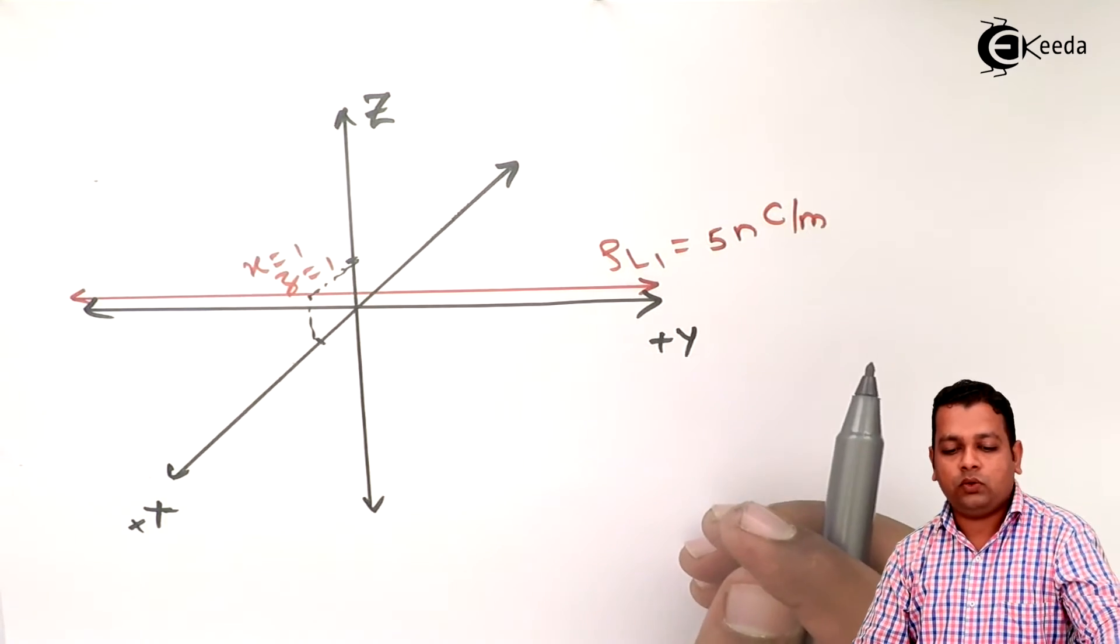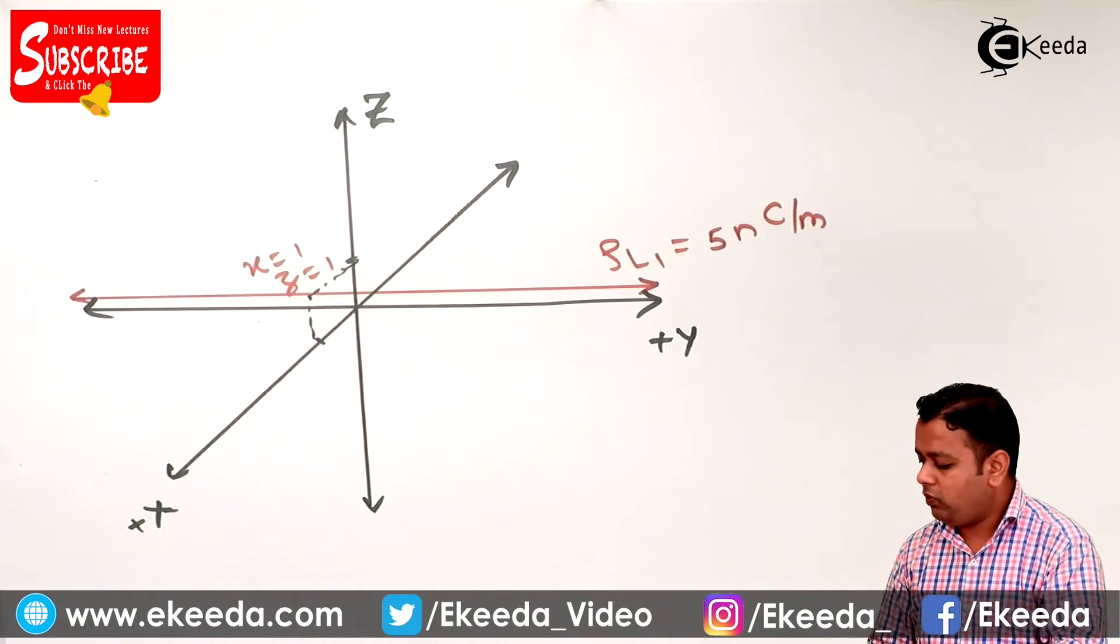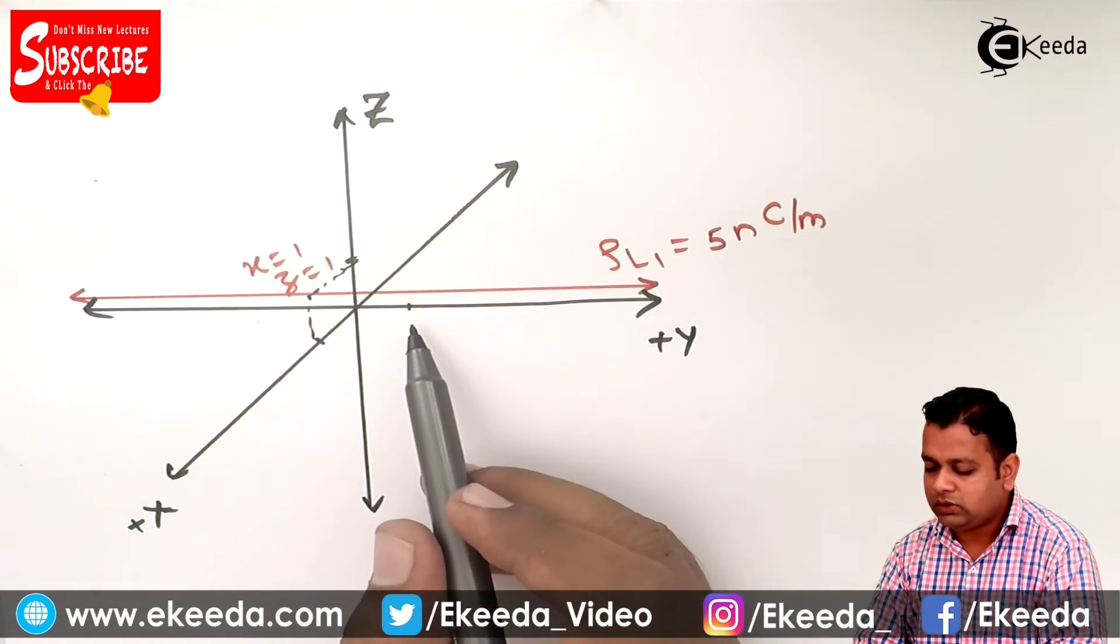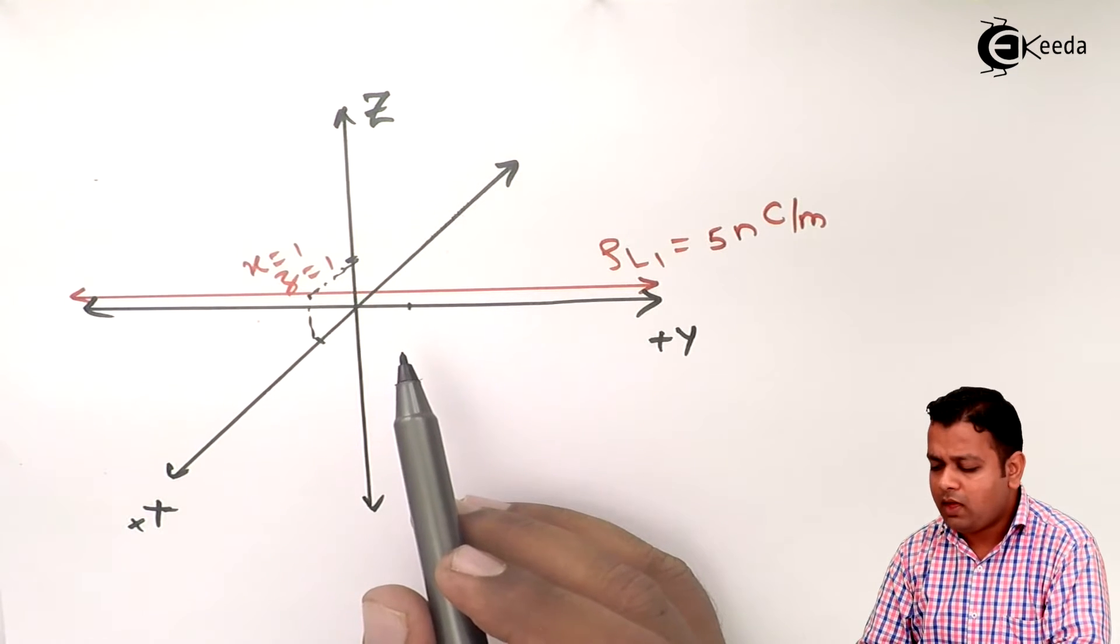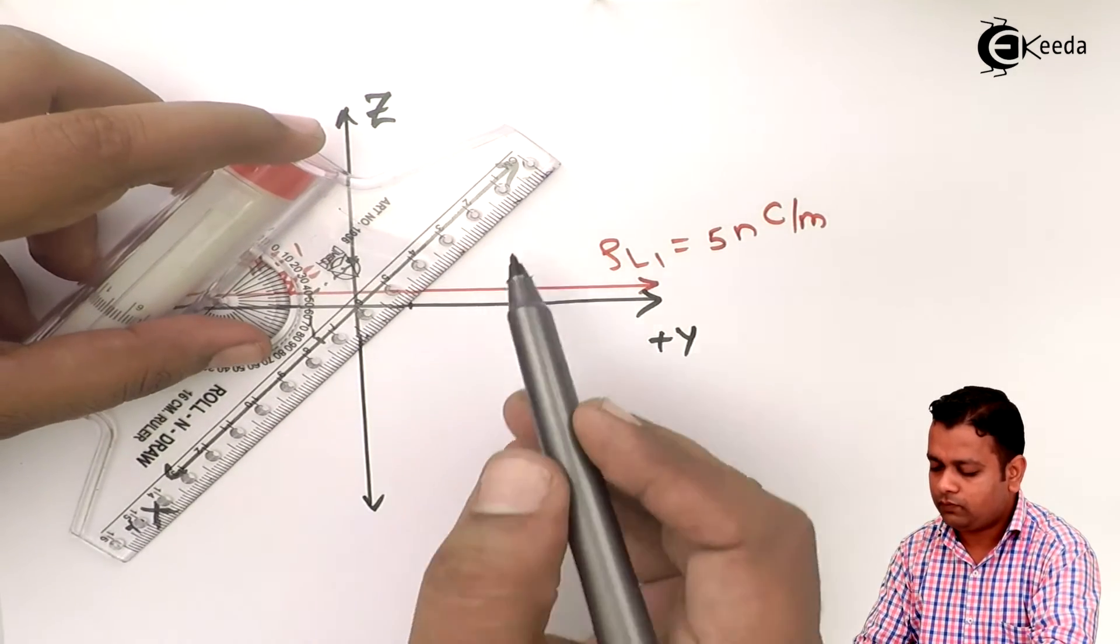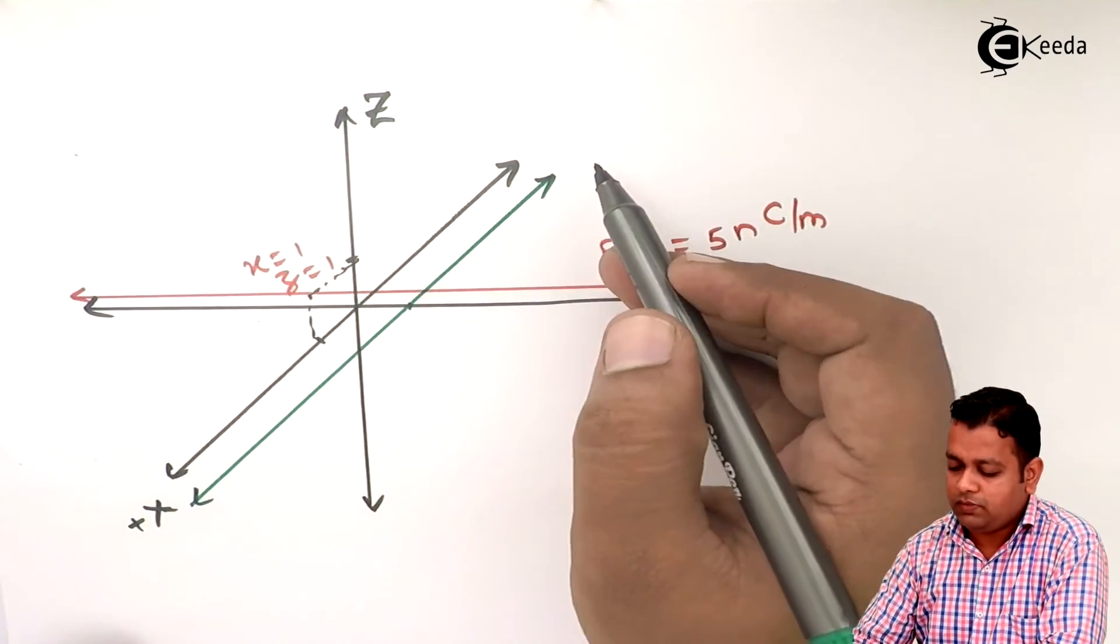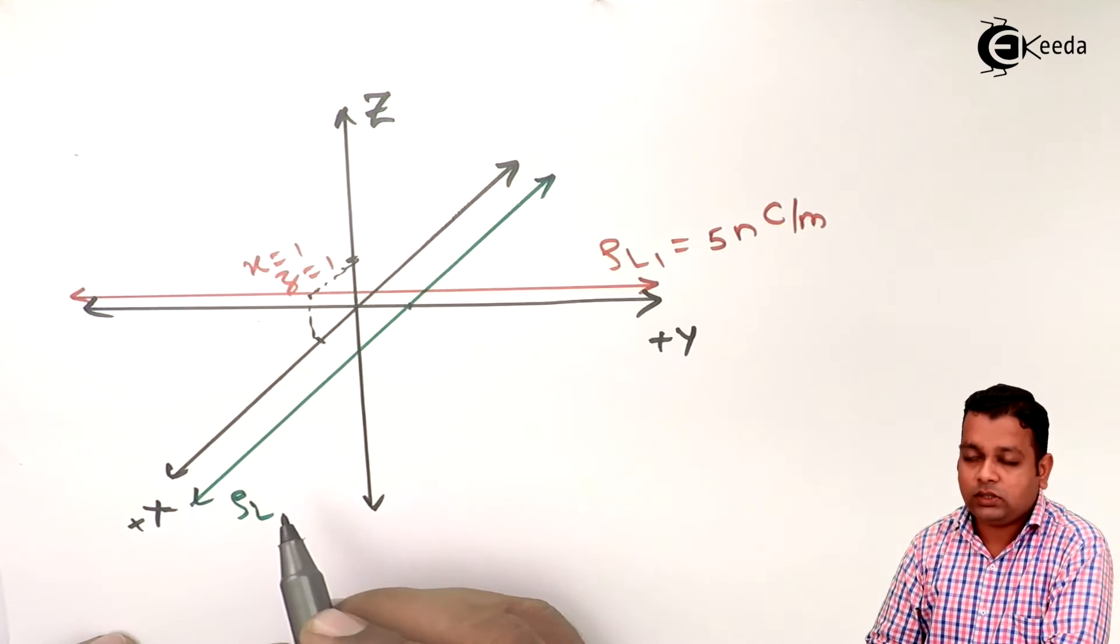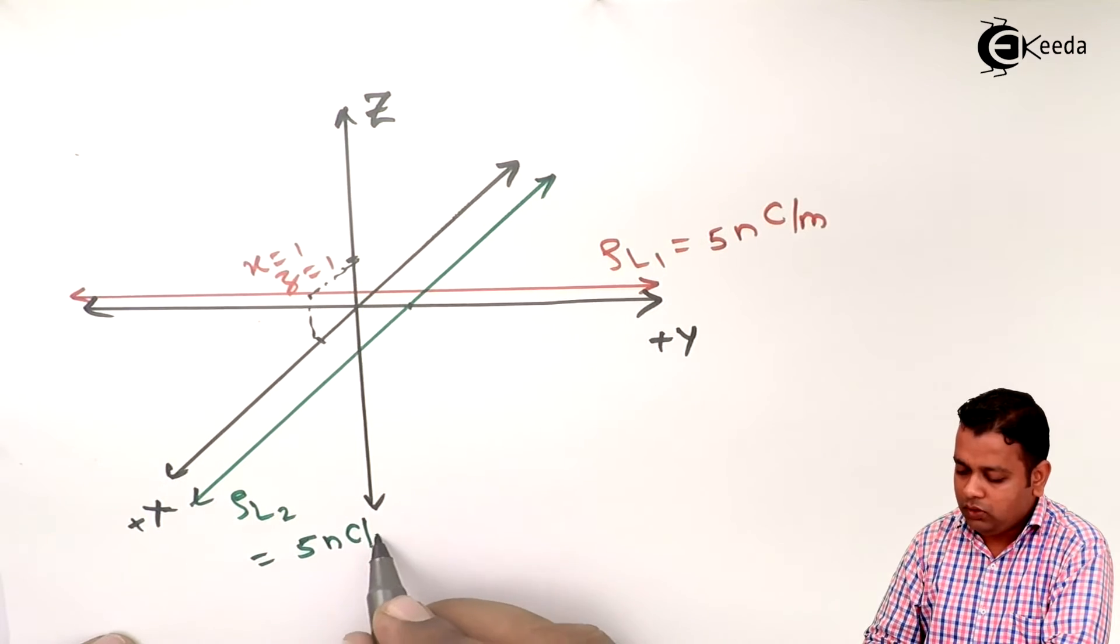Now we have to locate another line charge. Another line charge is given with the location y equals 1 and z equals 0. So y equals 1 I mark, so on y axis y equals 1, z equals 0, z equals 0 means I have to be here only. So x is not defined, so it means it is a line parallel to x line at y equals 1 and z equals 0. So I show you the line.